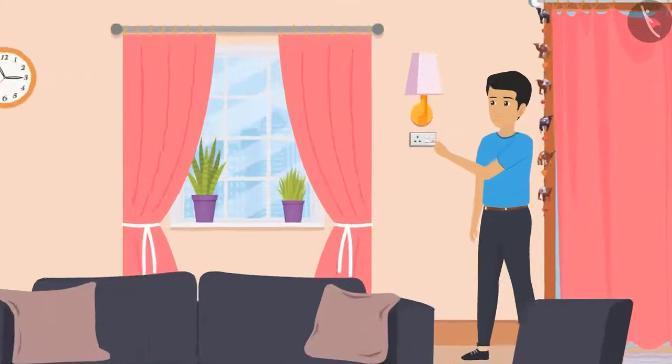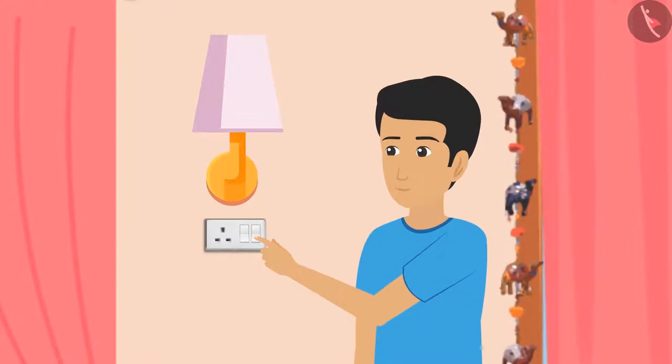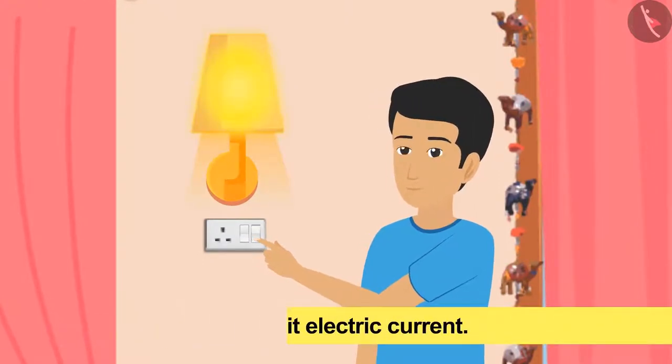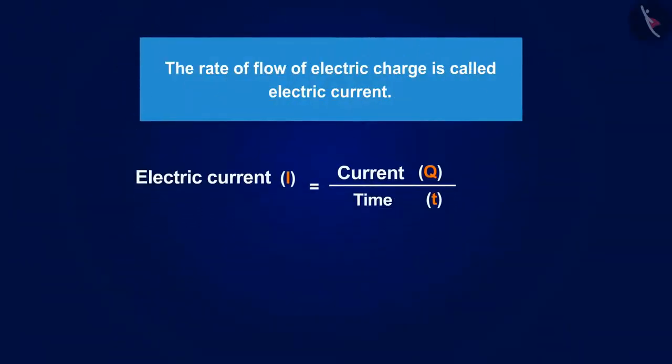If everything that flows has current, what will they call the current that glows the bulb when you put on the switch? We call it electric current. The rate of flow of electric charge is called electric current.